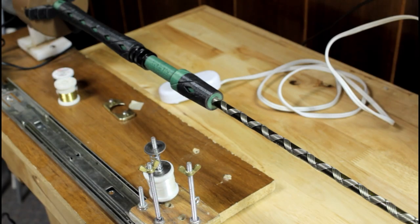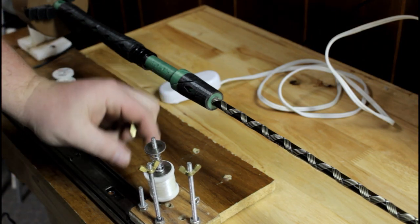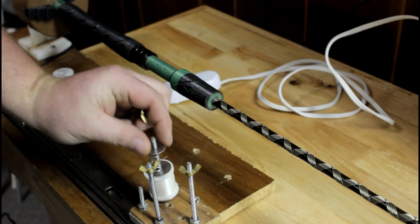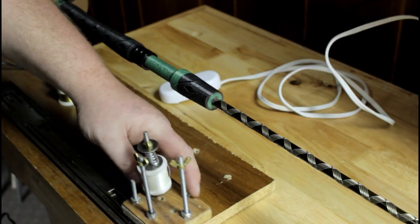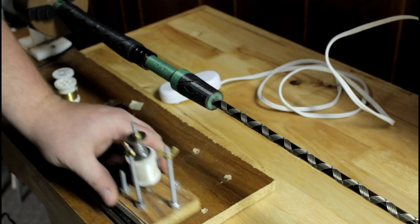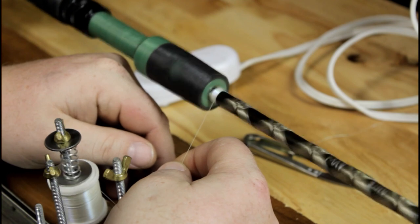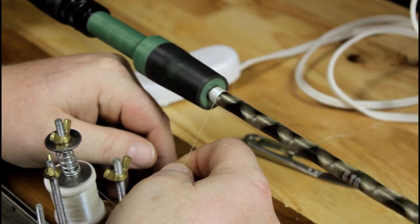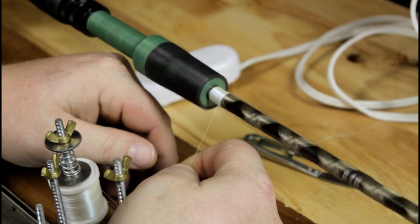So what this is gonna do is this spring is gonna push down and provide tension on this spool so it doesn't backlash on us. Then it's gonna go down to this eyelet and that's where we're gonna control where it goes to. A little fast. A little fast on that.